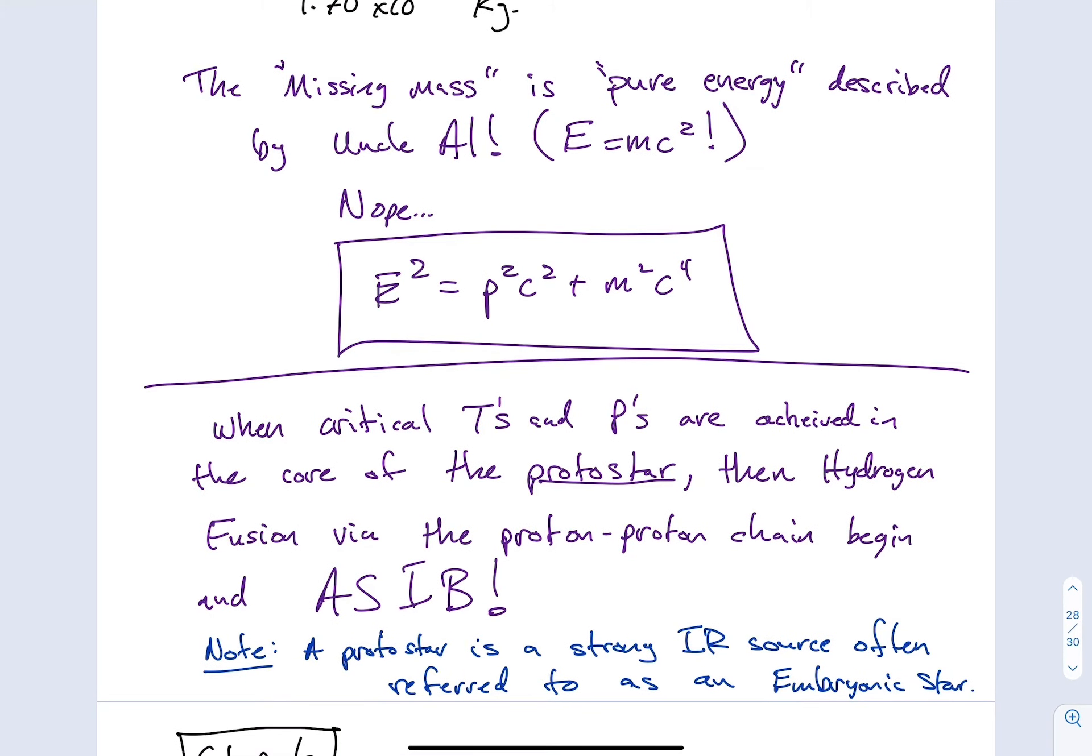Okay, so keeping in mind that we were continuing our discussion on what was labeled as step six in our stellar evolution notes, I just want to kind of conclude the step six now that we have the proton-proton chain going on. When critical temperatures and pressures are achieved in the core of the protostar, then hydrogen fusion via the proton-proton chain begins and a star is born. So after step five, we finally have a baby star. Well, actually, it turns out that this is now a middle-aged star, but we'll see that in a moment. I'd noted in here that a protostar is a strong IR source, and it's often referred to as an embryonic star.